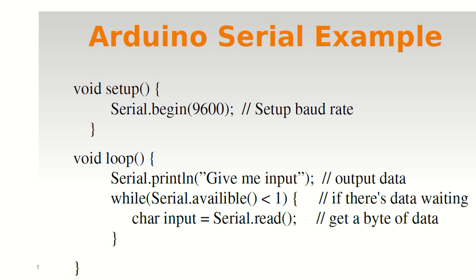In void setup, you initialize the serial port with Serial.begin at 9600 baud rate. In void loop, you display a message using Serial.println — the 'ln' means new line so it won't display on the same line. Whatever string you specify in quotes will be displayed on your computer monitor, transmitted serially. In a while loop, if you want to verify whether the serial port is busy or available, use Serial.available and check whether it is 1 or 0. If ready, read using Serial.read and assign to a variable — for reading a character.